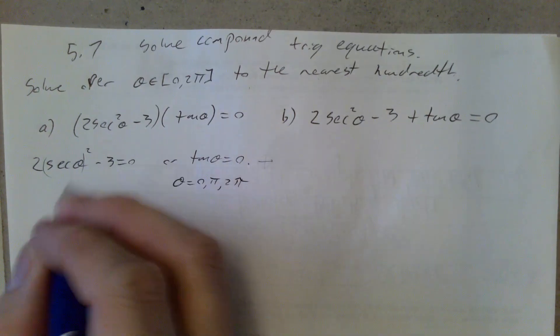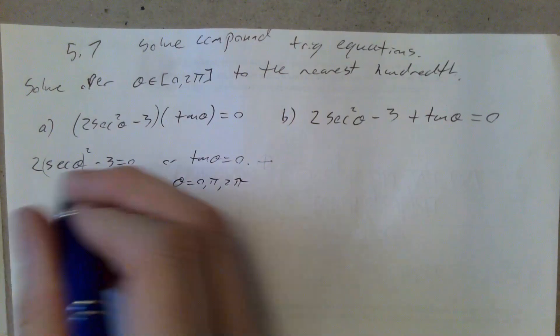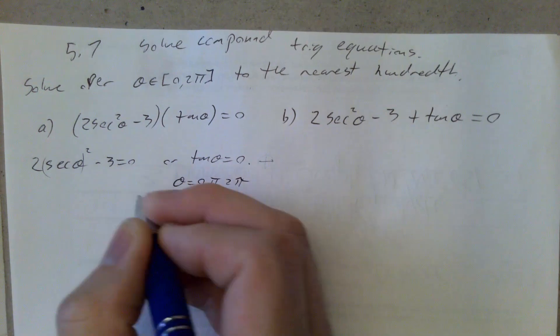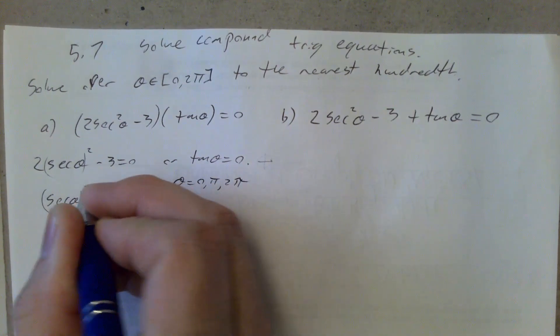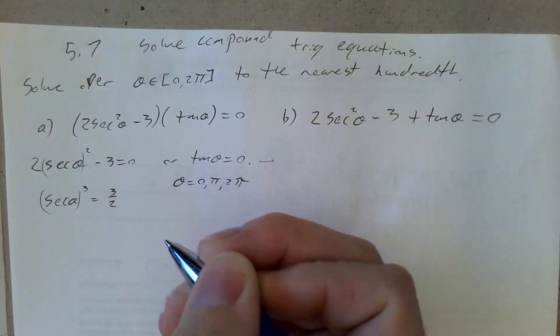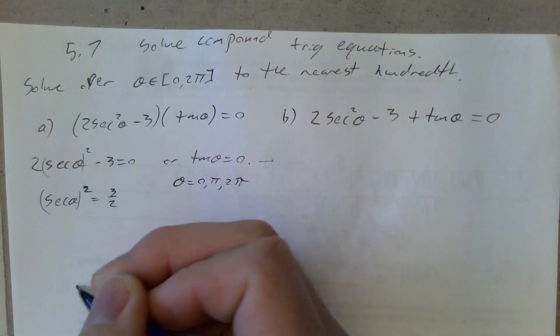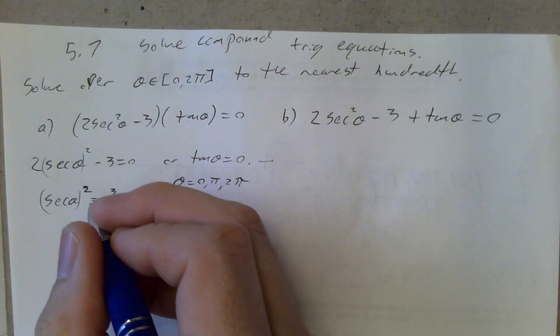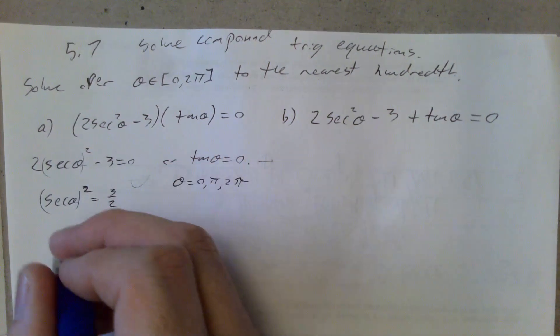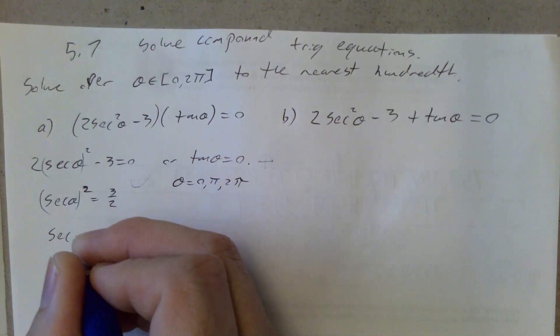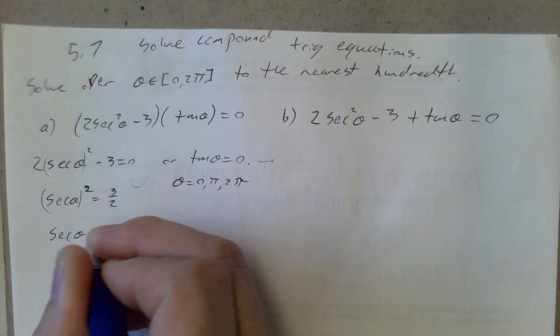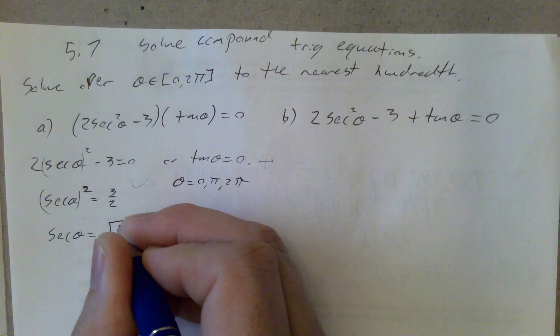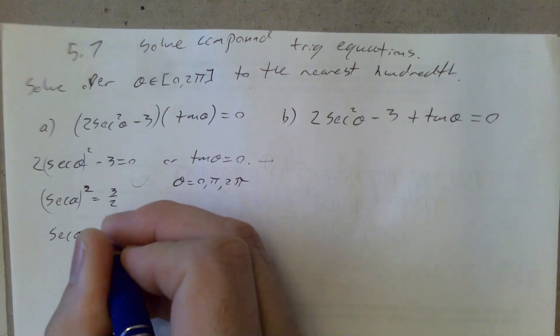Then I can come over here and solve this equation. Why don't we rearrange to adding 3 to both sides, dividing both sides by 2, giving us the secant of theta squared equals 3 halves. Treating it as a quadratic, we want to think about the possibility of two solutions. I get the square root of 3 halves, plus or minus.